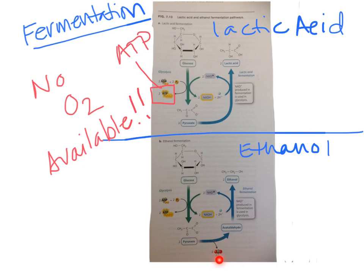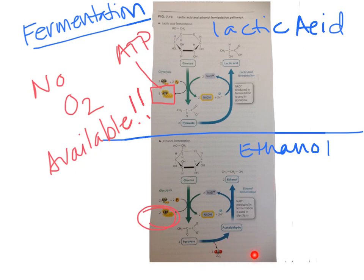We then dump the hydrogens onto that acetaldehyde intermediate to create ethanol. In the process, we regenerate NAD+, which allows us to keep doing glycolysis to get those precious two ATPs to do other work. In this case, the byproducts are ethanol and CO2.